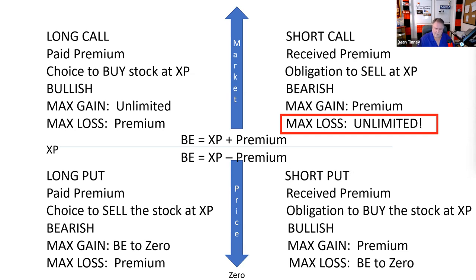Long put — the ones that throw people for a loop. When you're long a put, you paid the premium, you have a choice to sell the stock at the strike price, you're bearish, max gain is break-even to zero, max loss is the premium, and break-even is strike price minus premium. Short put — you receive the premium, you're obligated to buy the stock at the strike price, you're bullish, max gain is the premium, and max loss is break-even to zero. Those are our four basic option positions by way of review.